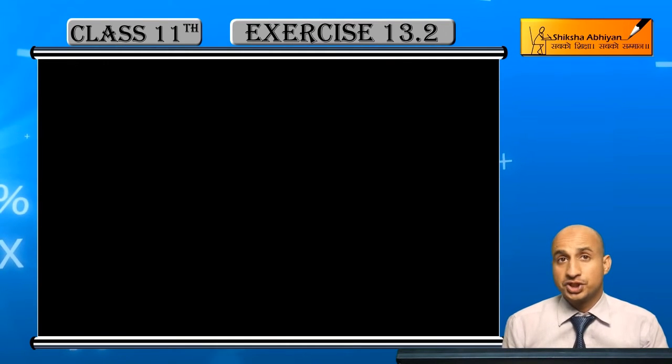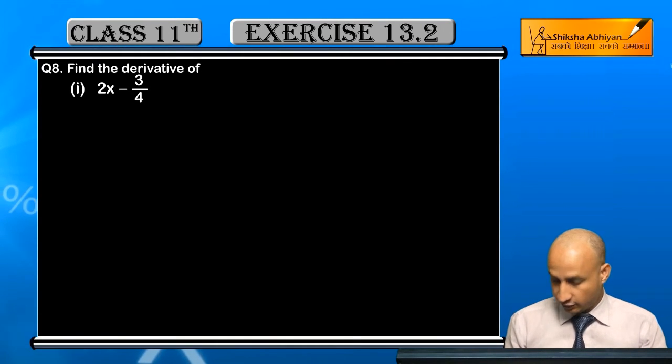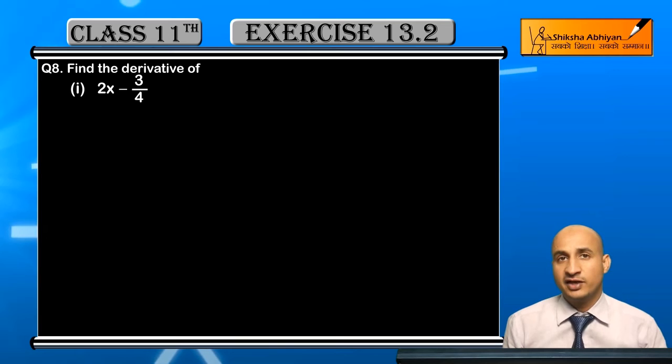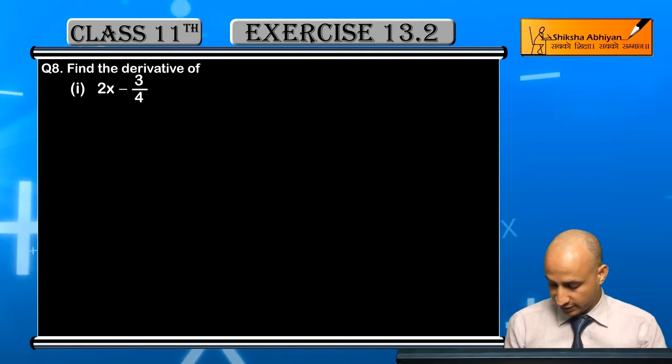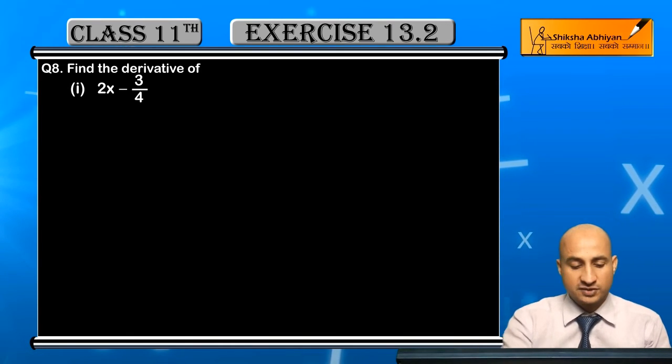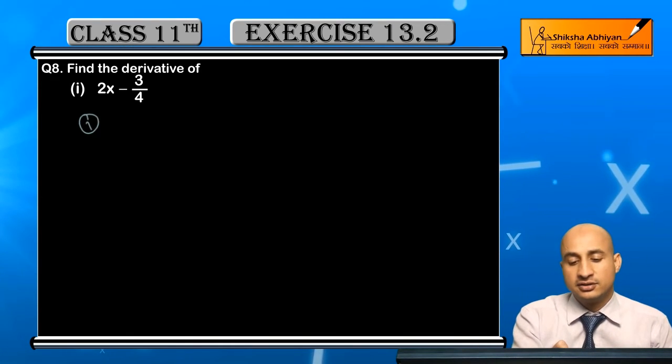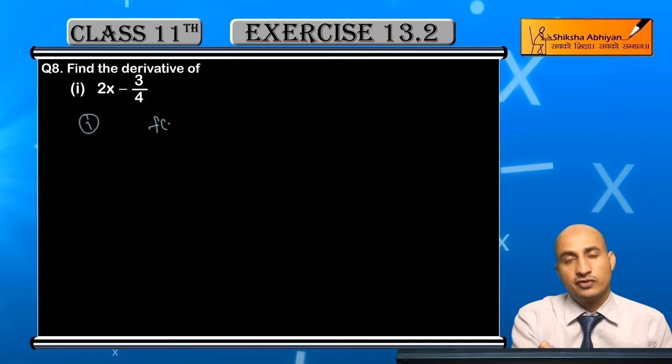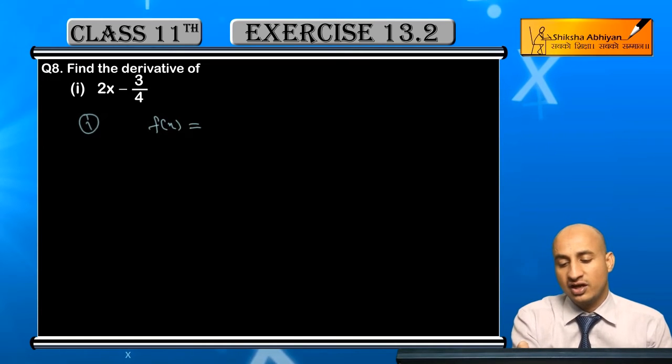Now students, see question 1. Find the derivative of question 8. We have 3 parts here. We have 2x minus 3 upon 4. See the first part here. This is the first function. I represent it as f(x), so f(x) is